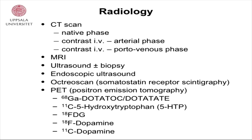MRI is an alternative. Ultrasound plus biopsy, endoscopic ultrasound. Octreo scan — somatostatin receptor scintigraphy. And then we have the PET scan, positron emission tomography: Gallium DOTA-TOC or DOTA-TATE, which is much more sensitive than the Octreo scan. 5-HTP we can only perform in Uppsala — it's a very specific method. Gallium is sensitive but less specific than 5-HTP. And then we have FDG — fluorodeoxyglucose — in patients with rapidly proliferating tumors.